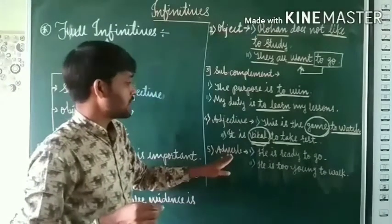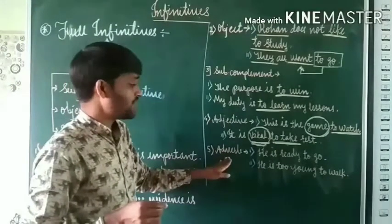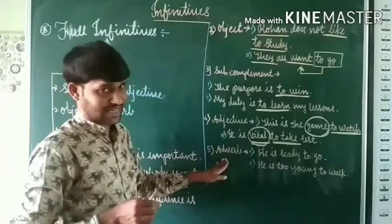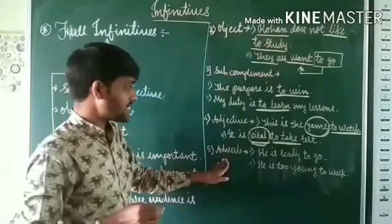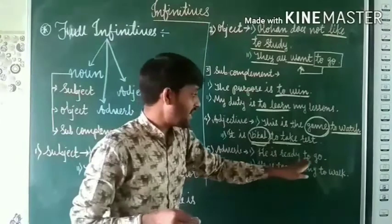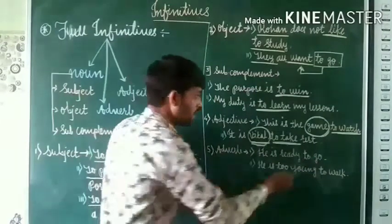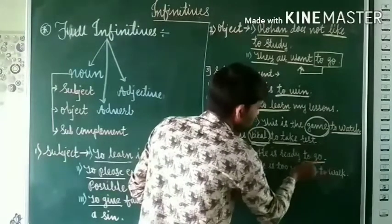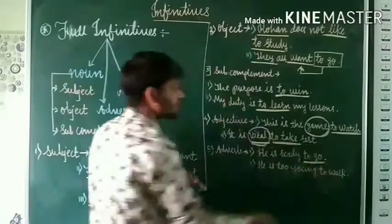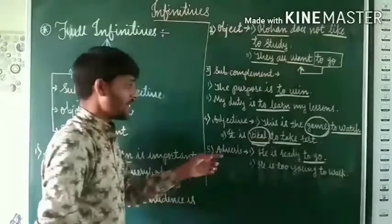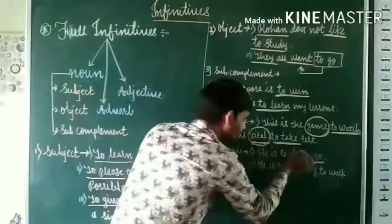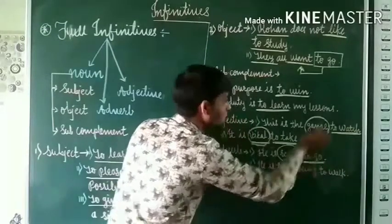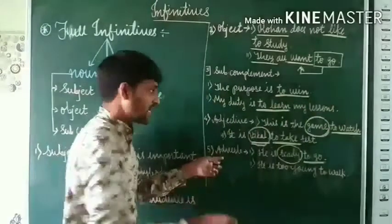Third type: full infinitives can function as an adverb in the sentence. For example: 'He is ready to go.' Here 'to go' is a full infinitive, but it functions as an adverb because it is modifying the adjective 'ready.'